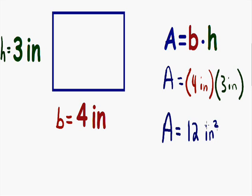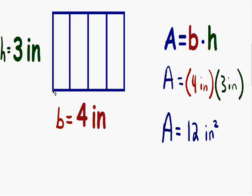Now I want to show you an illustration to make this a little more sense. I'm going to divide the base, which has a length of 4 inches, into 4 equal intervals of 1 inch. And I'm going to do the exact same thing for the height — since the height has a length of 3 inches, I'll divide it into 3 equal 1-inch intervals. Now you can see we have a bunch of squares with a base and height of 1 inch, so the area of each square is 1 square inch.